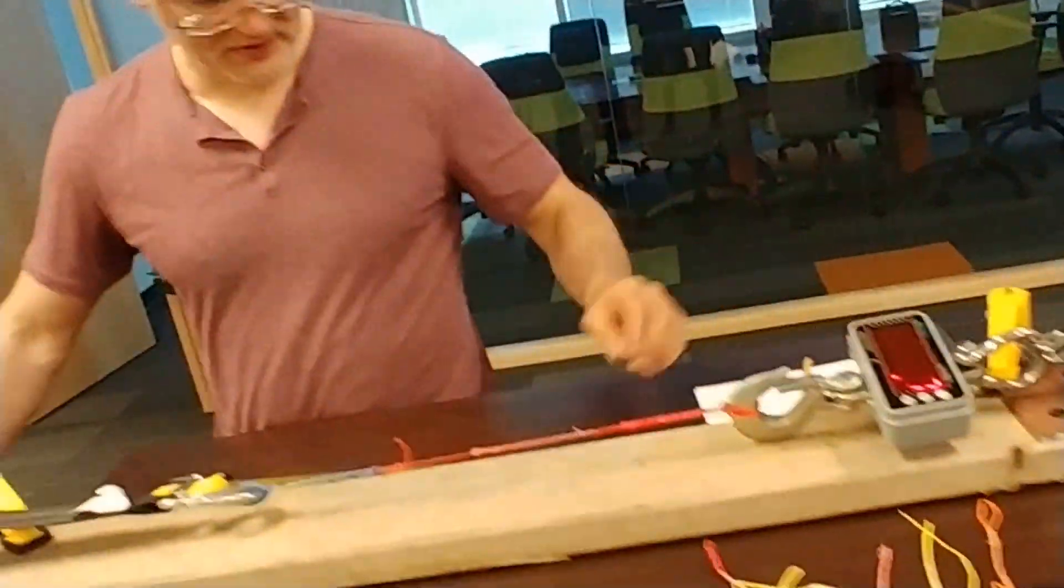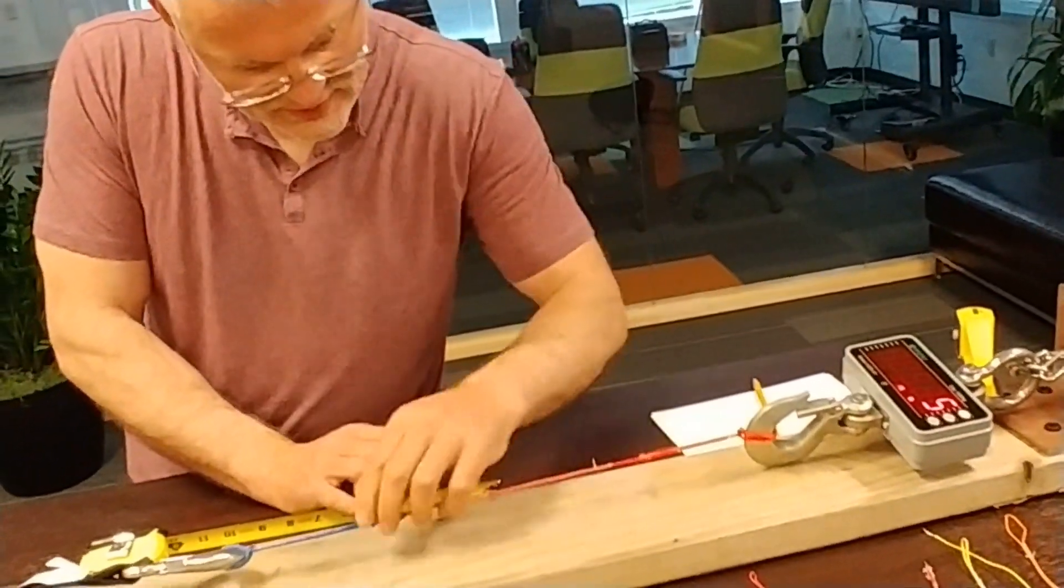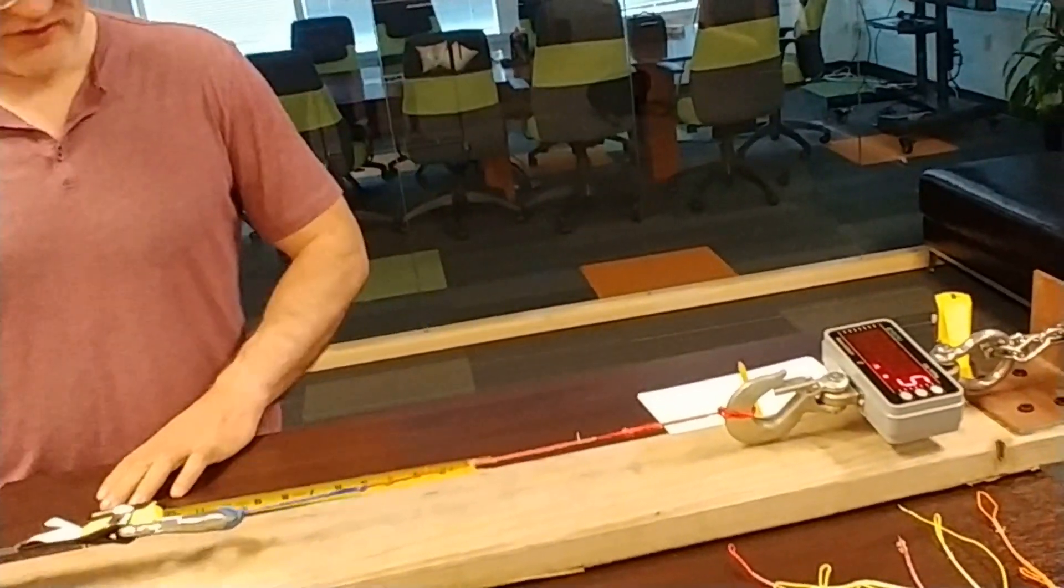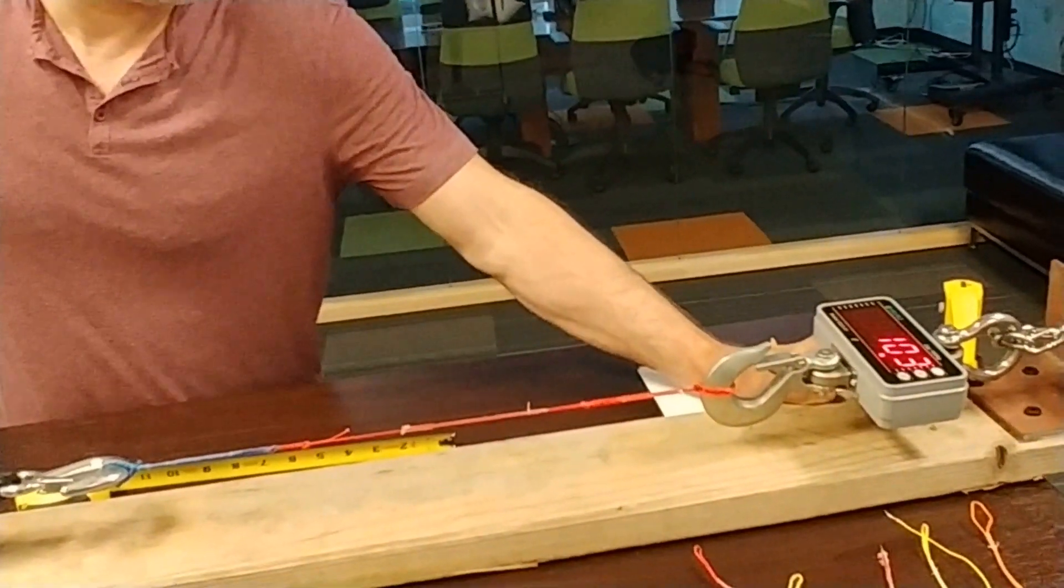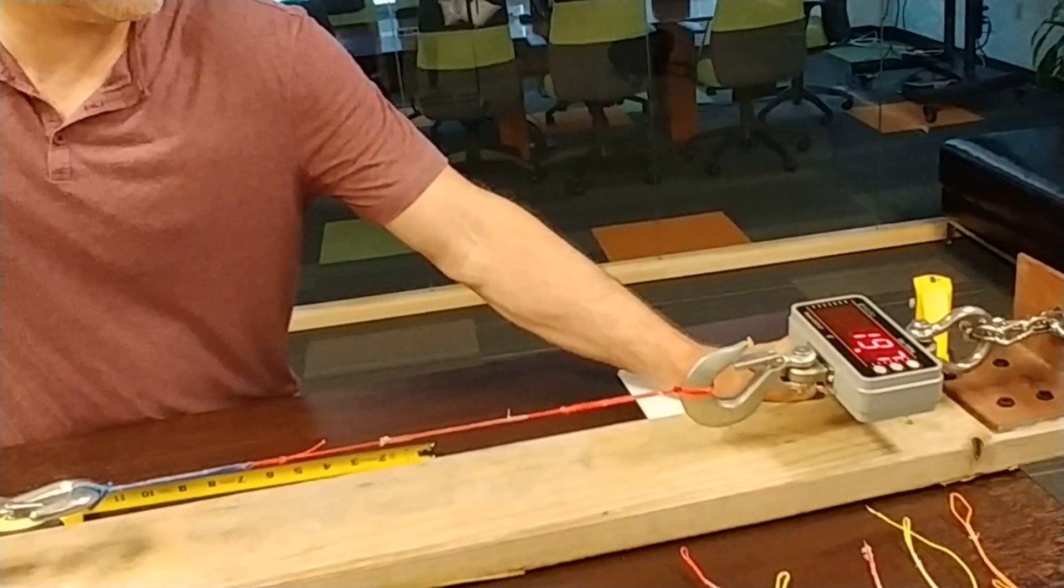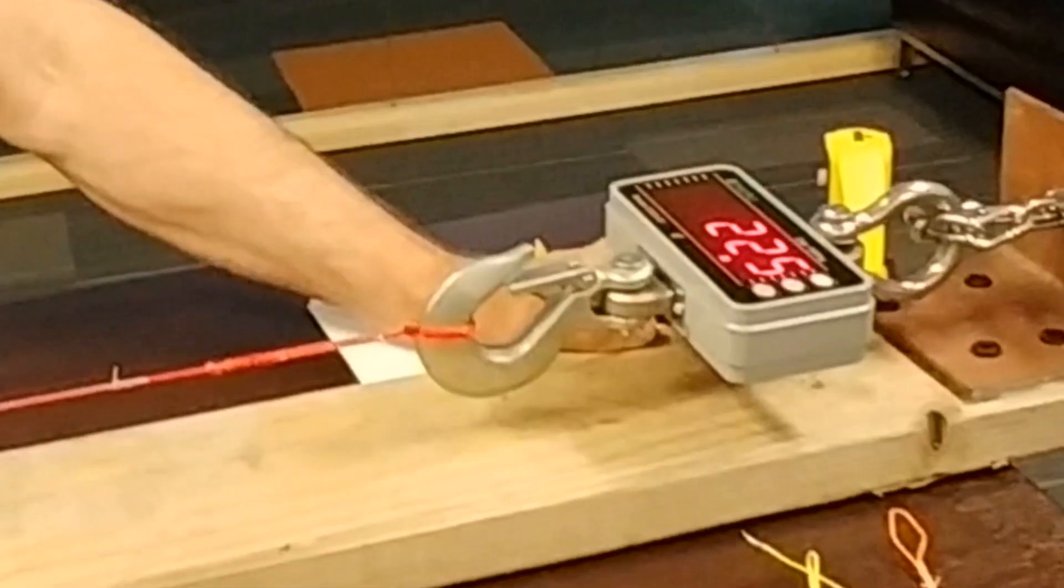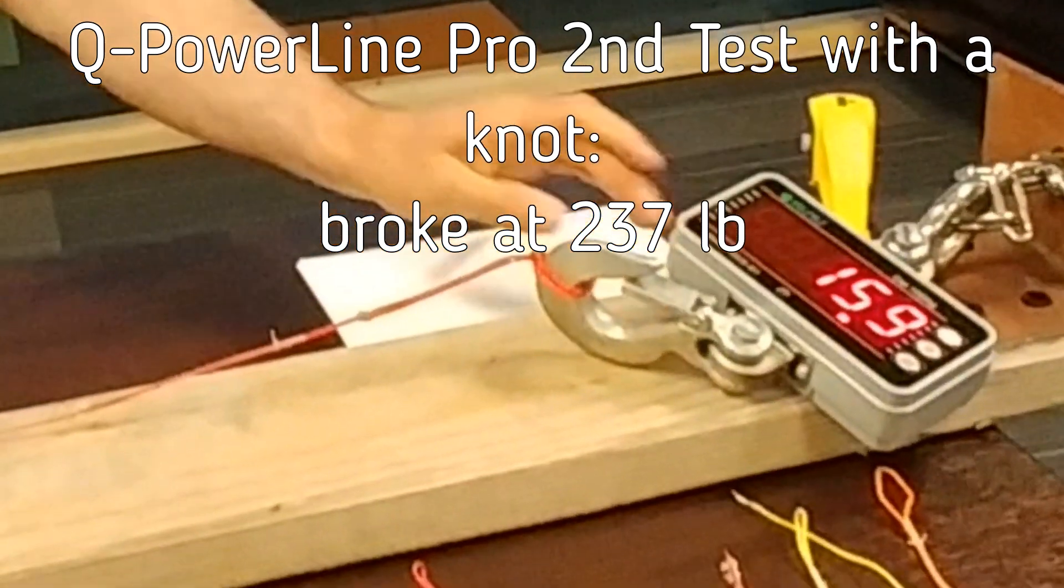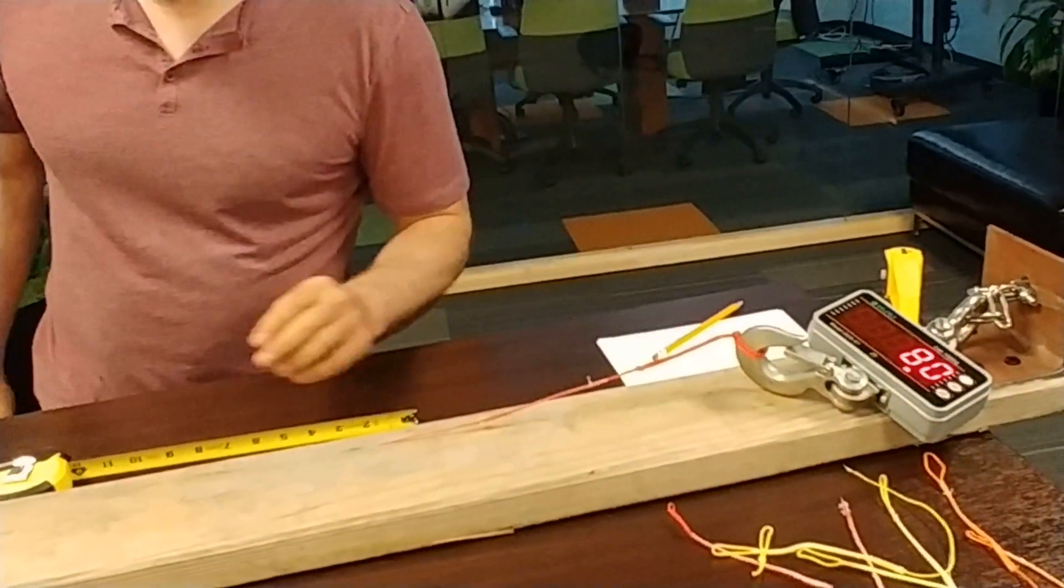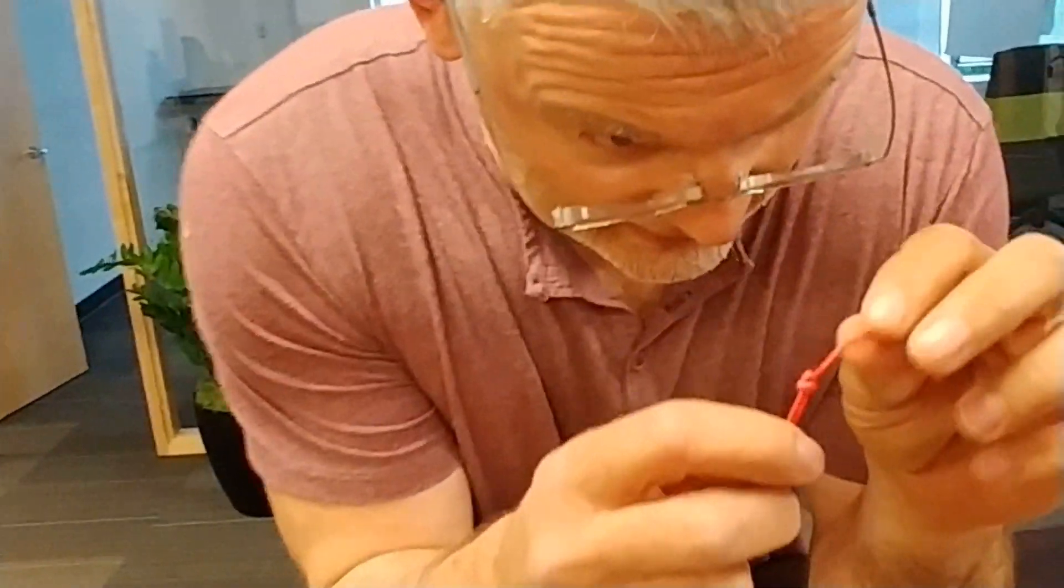Okay, let's try it again. Here we go. Approach number two. Hand tie knot, a sewn loop. See what's going to break first and at what force. We broke at about 240. And again, we broke at the hand tie knot.